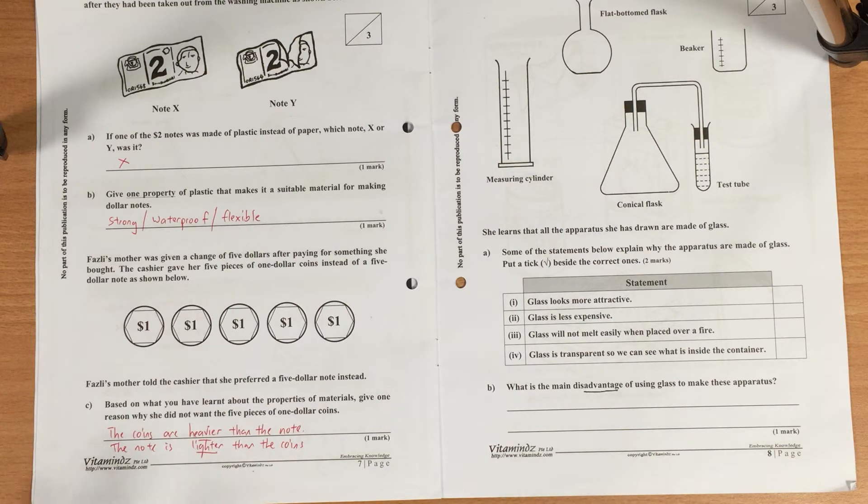Part C - there's the question about you having five coins versus one five dollar note, so which one is better? Obviously, many people do not like to bring so many coins with them because coins are heavier. Some of you just wrote that the coins are heavy. I would not accept this because here we are comparing two different things - the note as well as the coins. When you're comparing two things you need to use a comparative adjective: heavy/heavier, light/lighter, tall/taller, short/shorter. We have to compare the two different kinds of objects and we need to use the correct adjectives to describe them.